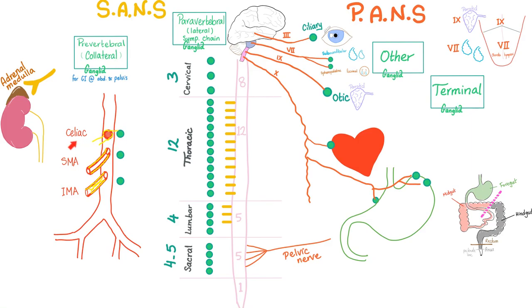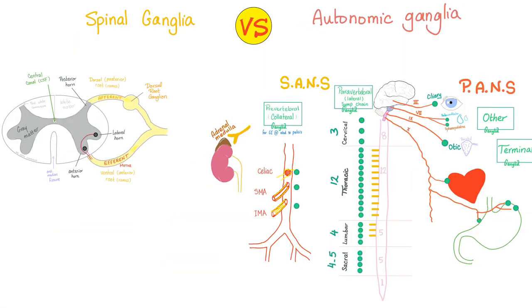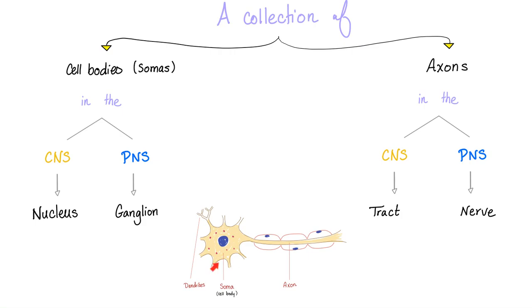Sympathetic comes out of T1 through T12 plus L1, L2, and L3. According to some textbooks, other textbooks will just say L1 and L2. Who cares? A ganglion is a collection of somas or cell bodies in the peripheral nervous system.